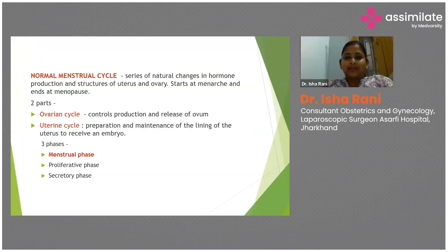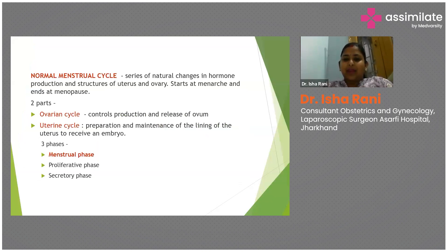Before going through the discussion, we have to understand what is a normal menstrual cycle. It's a series of natural changes in hormone production and structure of the uterus and ovary which starts at menarche and ends in menopause. It consists of two parts: the ovarian cycle, where egg development happens and it controls the production and release of ova. It has two phases: the follicular phase and the luteal phase.